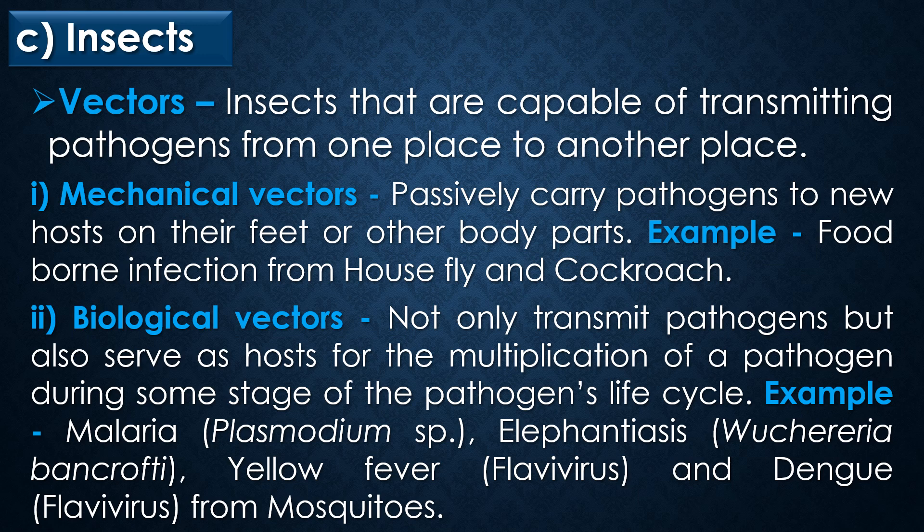Biological vectors not only transmit pathogens but also serve as hosts for the multiplication of a pathogen during some stage of the pathogen's life cycle. Examples transmitted through the biological vector mosquito include malaria caused by Plasmodium species, filariasis caused by Wuchereria bancrofti, yellow fever caused by Flavivirus, and dengue fever caused by Flavivirus.